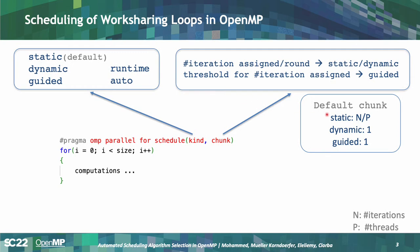The default chunk values differ by kind. For static, the default chunk is N over P, where N is the number of iterations and P is the number of threads. For dynamic it's 1, and for guided it's also 1. The chunk parameter has different meanings for different scheduling kinds: for static and dynamic it sets the number of iterations assigned per scheduling round, while for guided it acts as a minimum threshold.